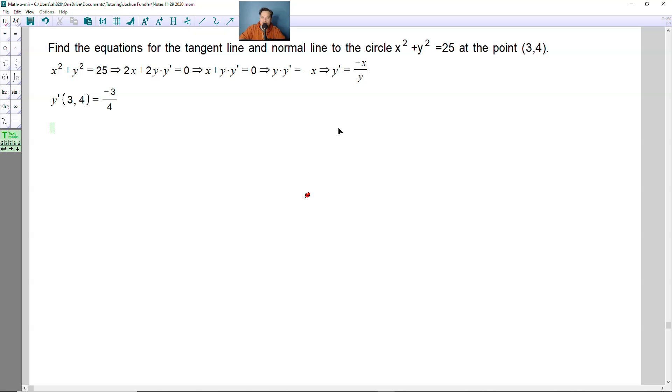Now what you can do is build the equation of the tangent line as follows. y minus the y coordinate given, which is 4, is equal to, and then here on this side you put the value of the derivative, so it's negative 3 fourths, and then here you put x minus 3.